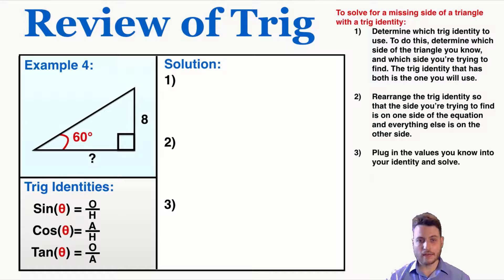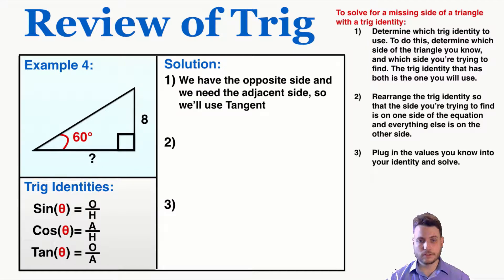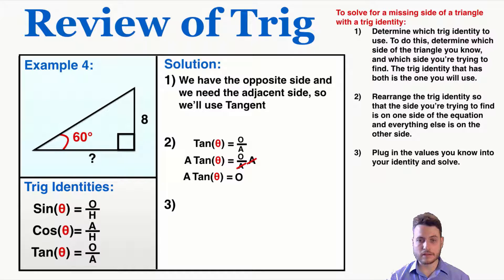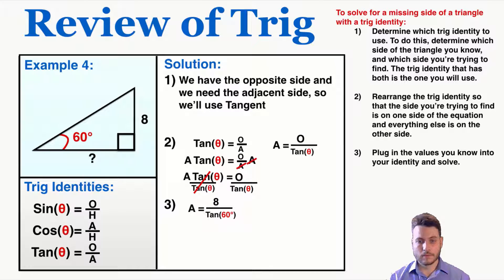Example 4: I have the opposite side and I'm trying to find the adjacent side. The only identity that connects those is tangent. Using tangent, I rearrange to get the adjacent side by itself. Plugging in my numbers gives me an adjacent side of 4.7 — so that's my answer.